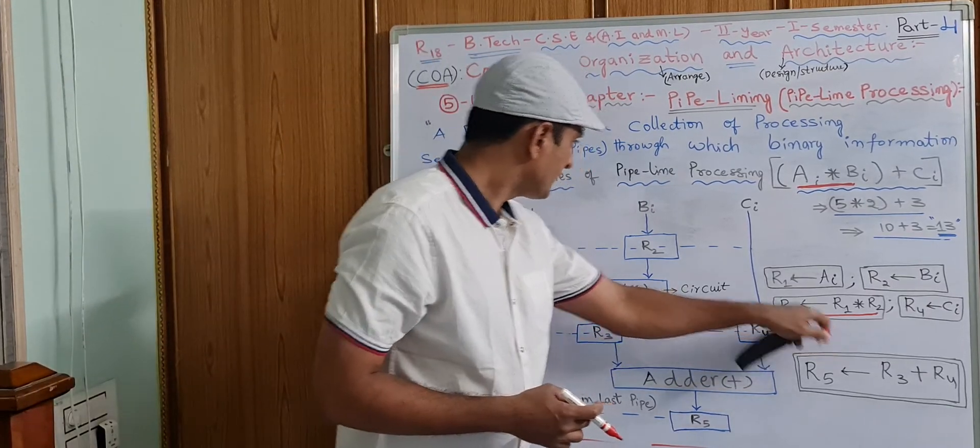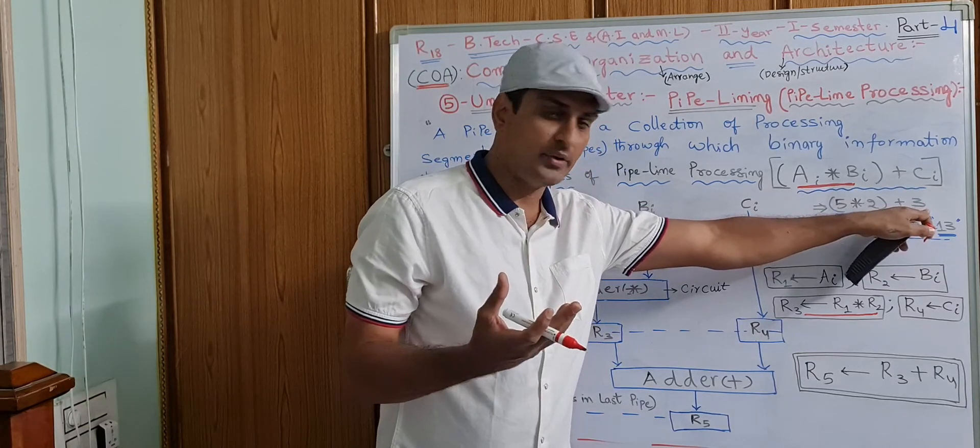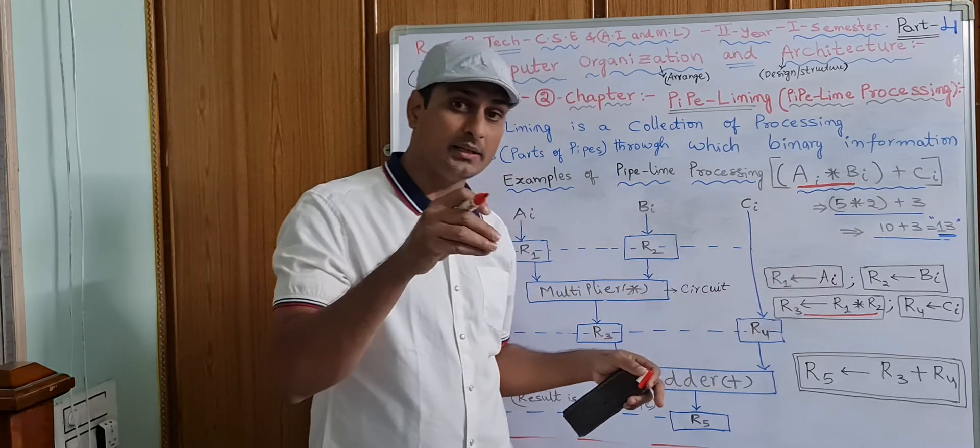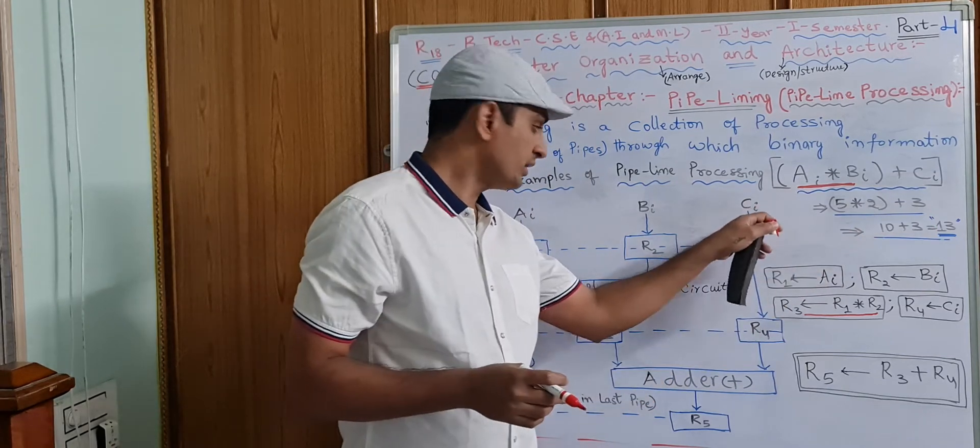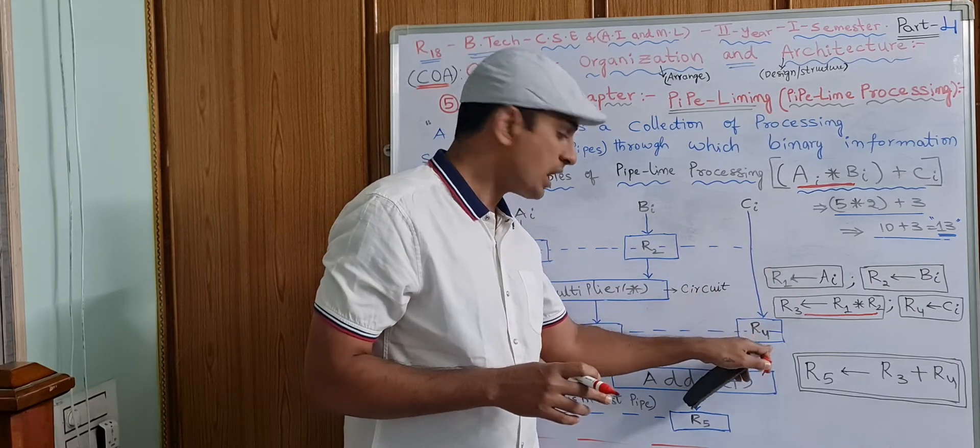Here, the CI value, for example if you imagine the CI register value is 3, in the form of binary. The 3's binary value will be stored in the R4 register.